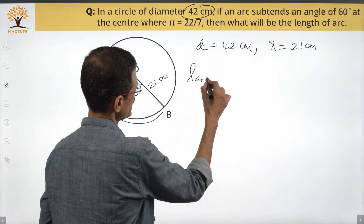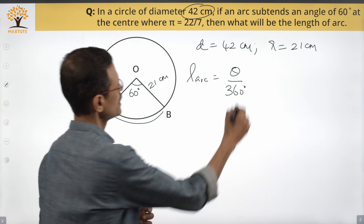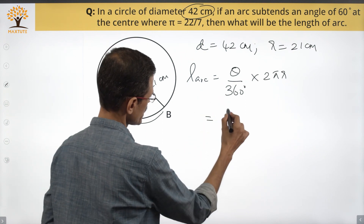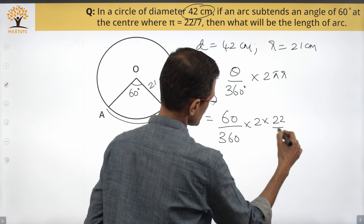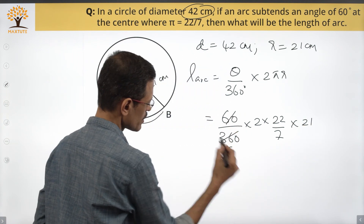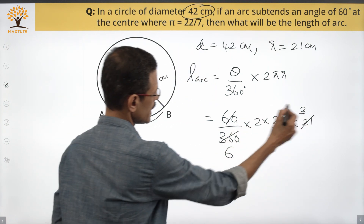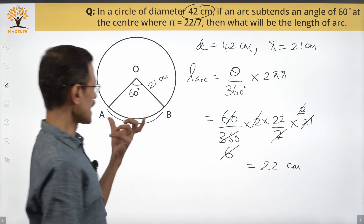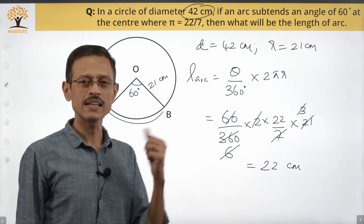The formula for arc length is (theta / 360) × 2πr. With theta = 60, pi = 22/7, and r = 21: (60/360) × 2 × (22/7) × 21. Cancelling: 60 with 360 gives 1/6, 7 with 21 gives 3, then 2 × 3 = 6, and 6 cancels with 6, giving 22. So the length of arc AB equals 22 centimeters.